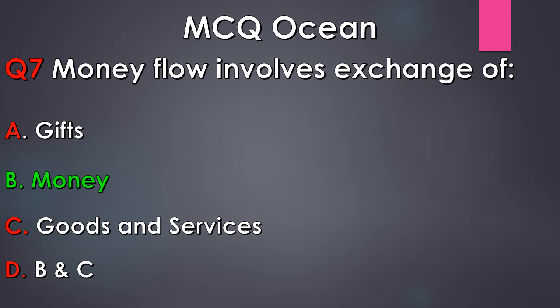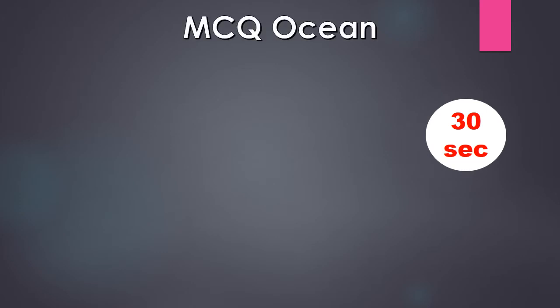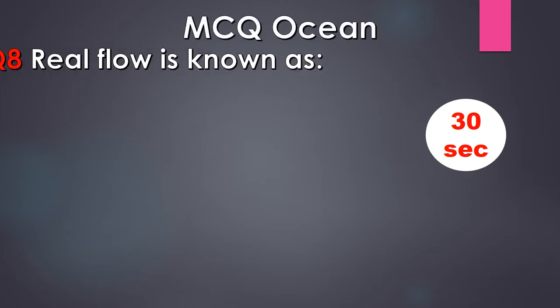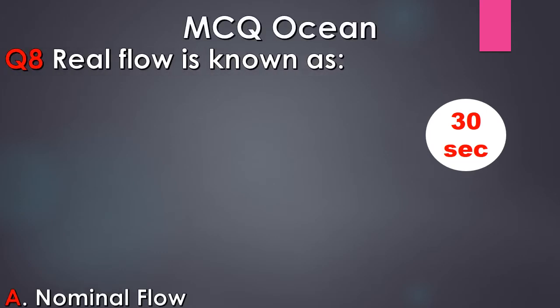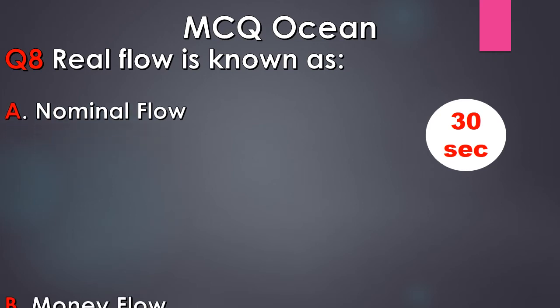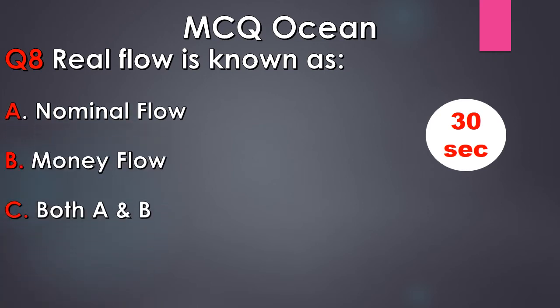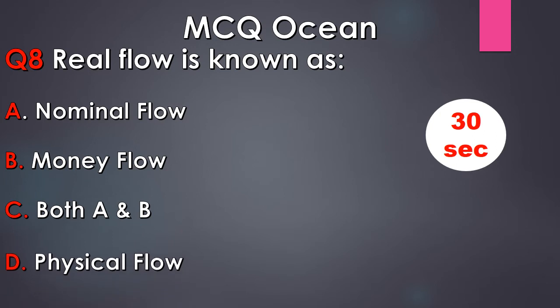Question number 8. Real flow is also known as: A. Nominal flow, B. Money flow, C. Both A and B, D. Physical flow. Your time starts now.